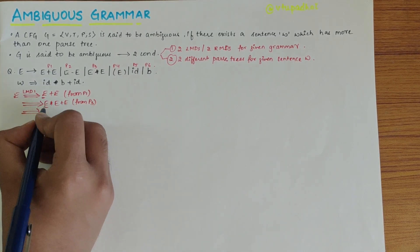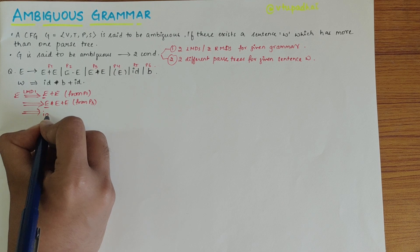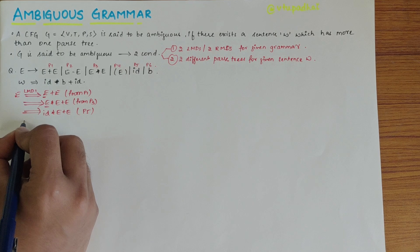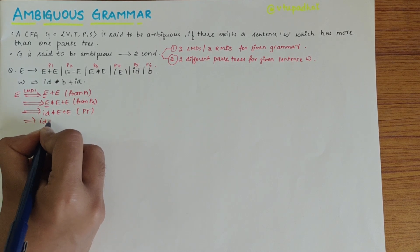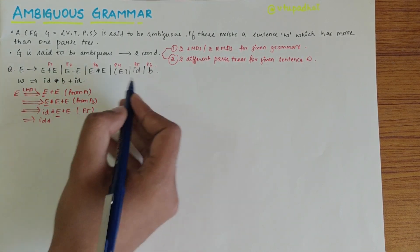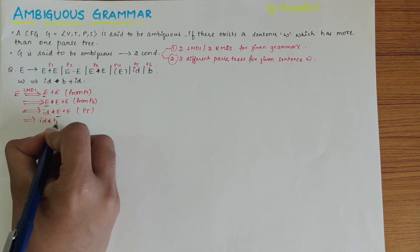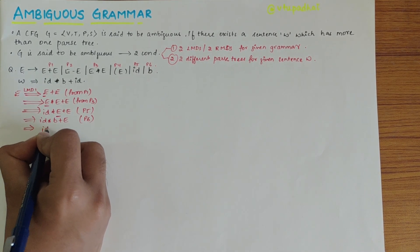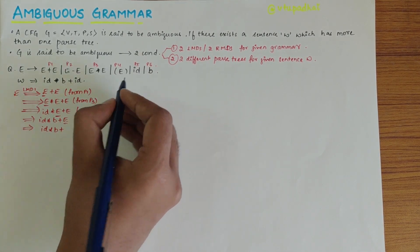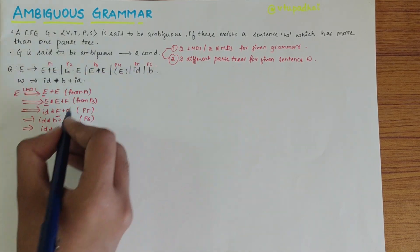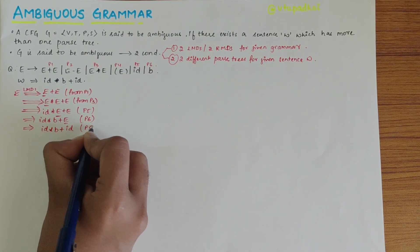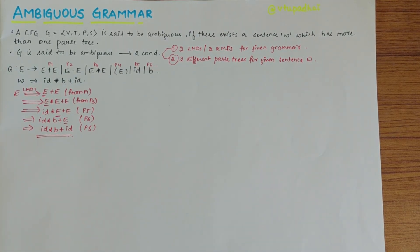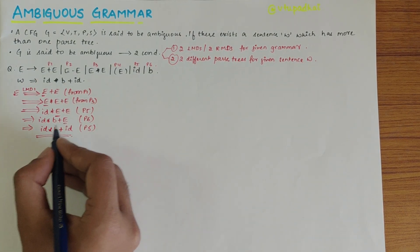Next, this E is changed to ID, giving ID*E+E — from P5. Then this E is changed to B, giving ID*B+E — from P6. Finally, E derives ID — from P5 — giving ID*B+ID. We have obtained the required sentence w.